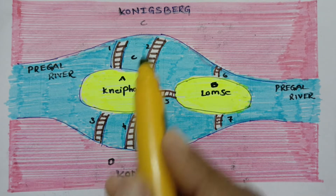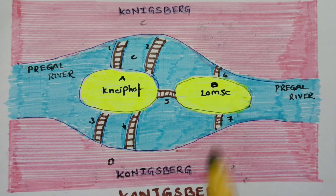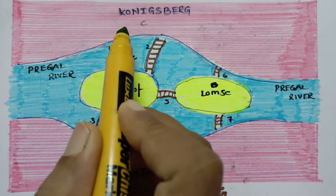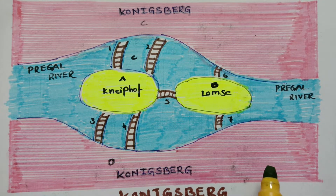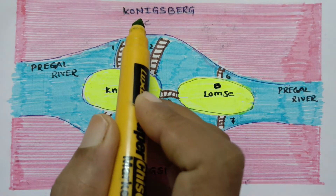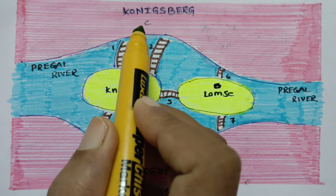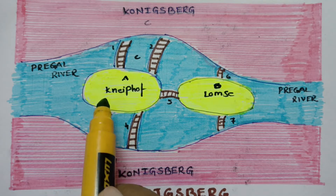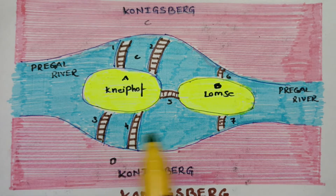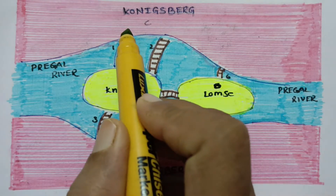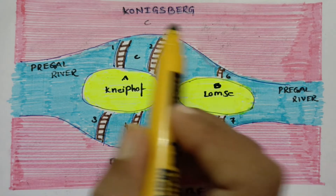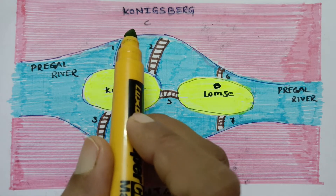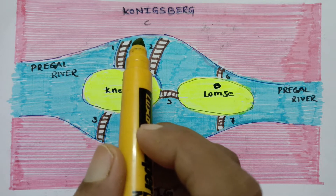The islands A and B and the banks C and D of the Pregel River are connected by 7 bridges — bridge 1, 2, 3, 4, 5, 6, and 7. The problem was to start from any one of the land areas, walk across each and every bridge exactly once, and return to the starting point. Is it possible?